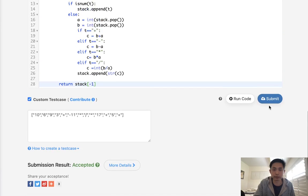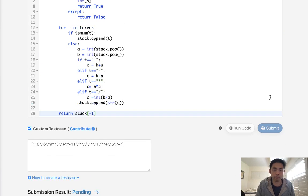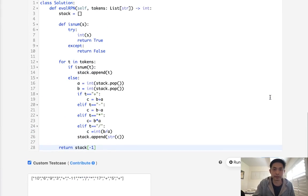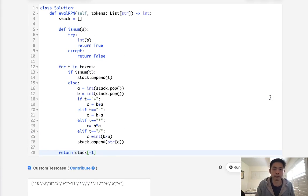Okay, so that looks like it's working, so let's submit it. And there we go, accepted. So time complexity is O of N, and space complexity is also O of N because of our stack.